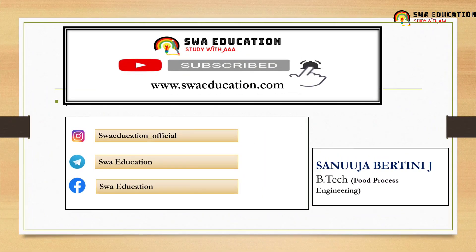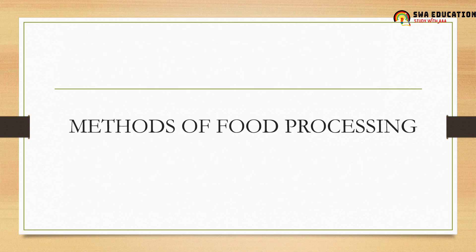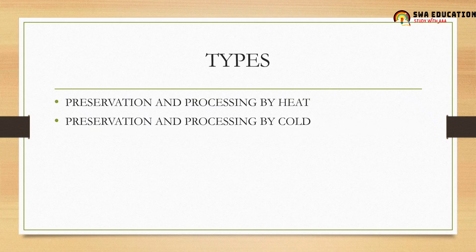Welcome to today's class. In the last session we learned about the terms and principles of food processing. Now let's move into the next syllabus: the methods of food processing. There are various methods, and we will study two types — preservation and processing by heat, and preservation and processing by cold.